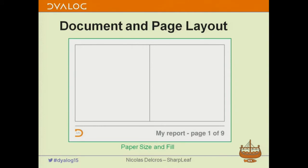Obviously one of the properties is its paper size and fill, so each page may have a different paper size and fill. Every time I mention one of these concepts, it will basically be one hit into the API — whether it's a property, a method, or a quad-new, whatever. I'm just talking about the concepts here.